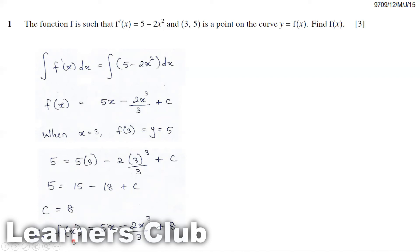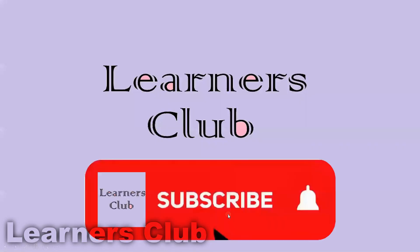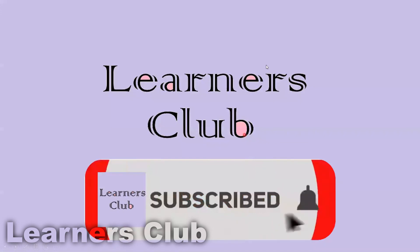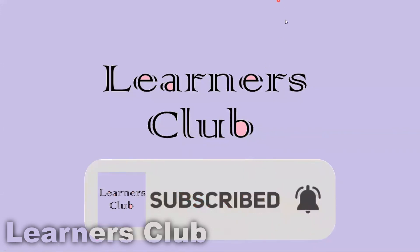Therefore, the function f(x) is equal to 5x minus 2x³ over 3 plus 8. This is the answer.